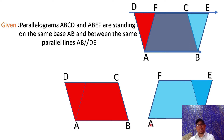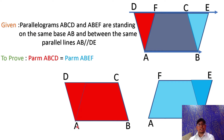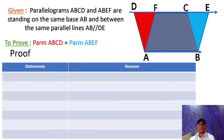You are seeing two parallelograms: a blue parallelogram ABEF and a red parallelogram ABCD. These both are standing on the same base AB and between the same parallel lines AB parallel DE. So we need to prove that this red parallelogram ABCD equals this blue parallelogram ABEF. Now in proof, you always have statements and reasons.